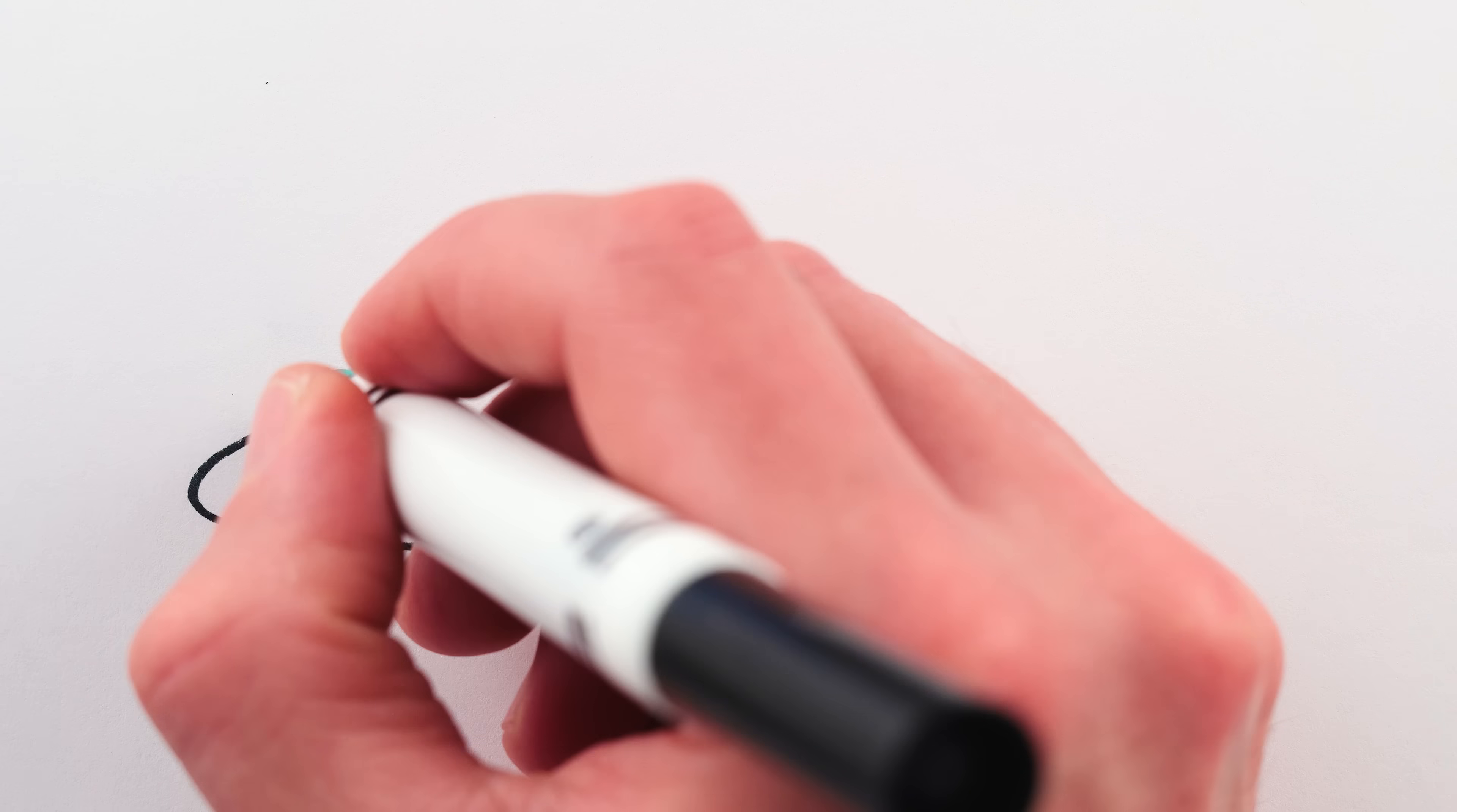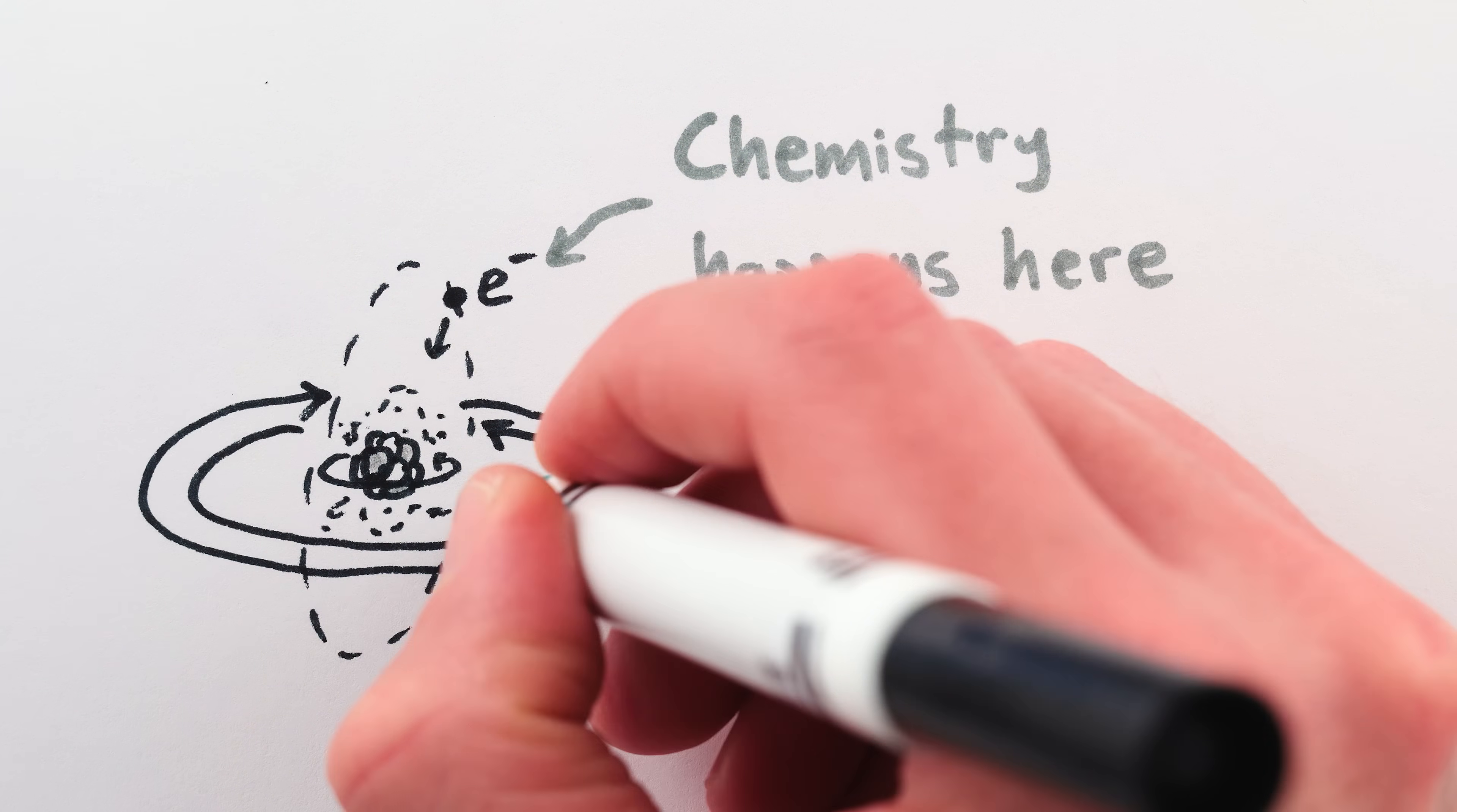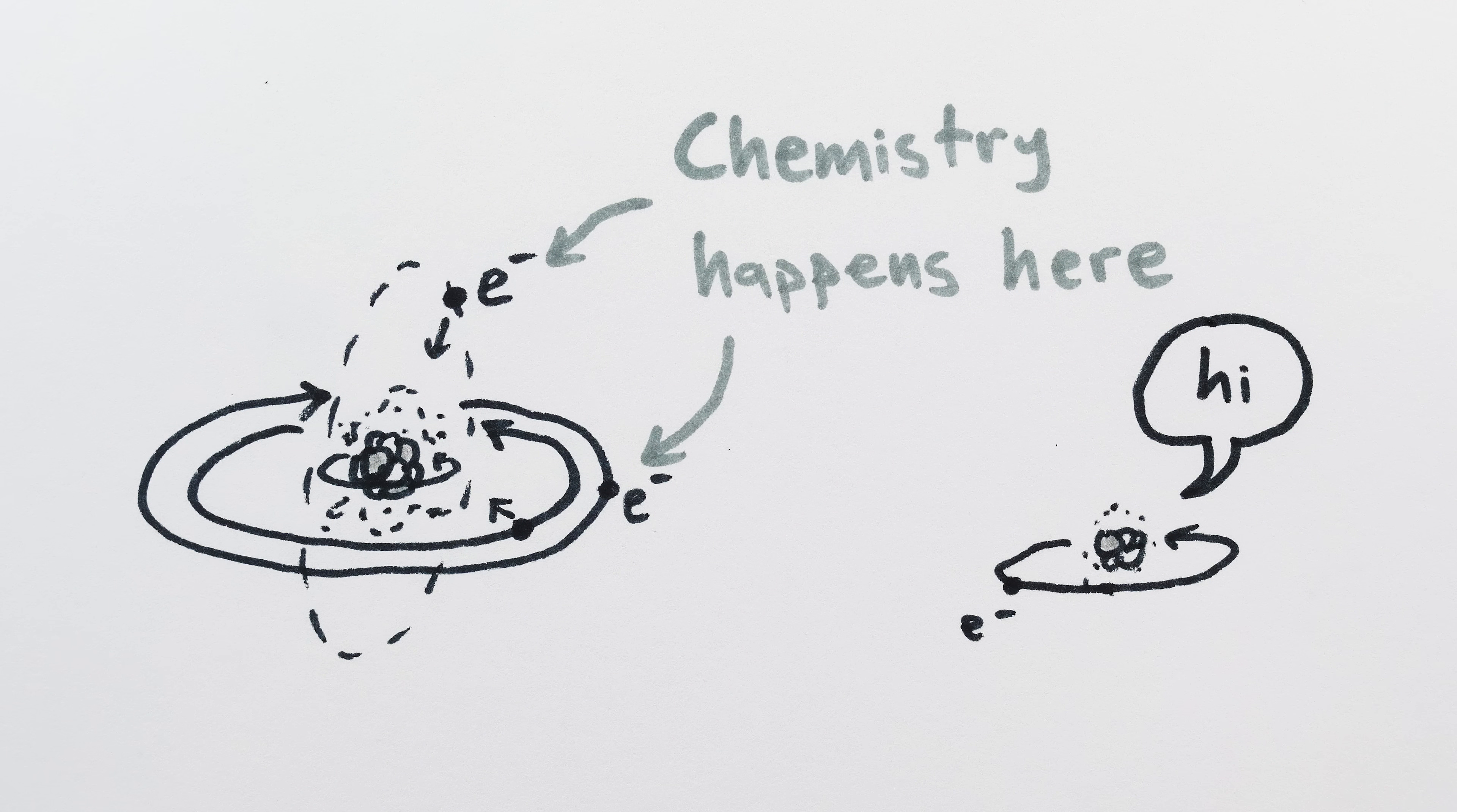This is oversimplifying, but the chemical properties of an atom are determined by how its outermost electrons are behaving, since they are the most weakly attracted to the nucleus and therefore most available to interact with other atoms.